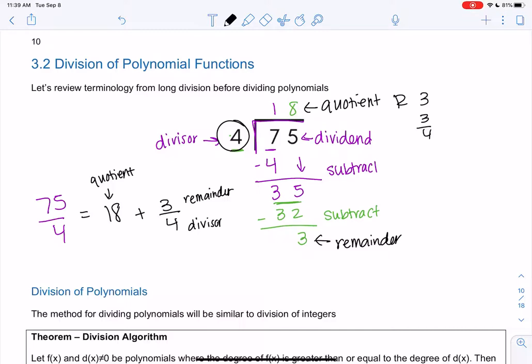It's also true if I wanted to check my work, I would do 18 times 4. And then you add the remainder. And it should bring you back to 75. So it will be quotient times divisor plus remainder is 75. And I'll formally define that when we get into polynomials. But just relate it to numbers. It makes it a little bit easier.